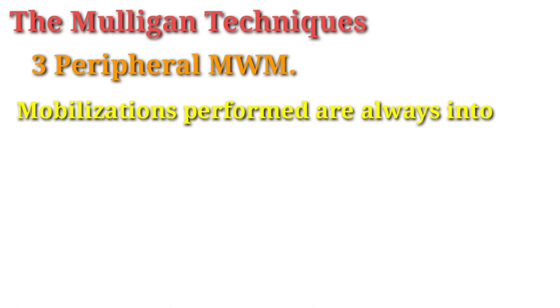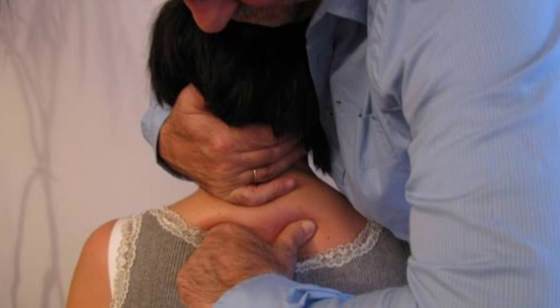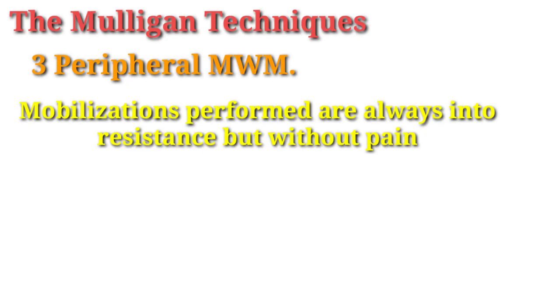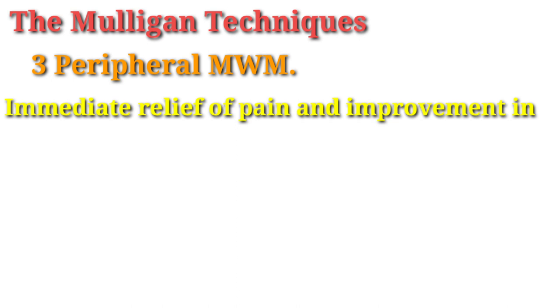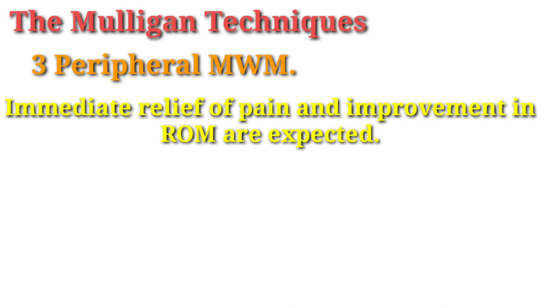This mobilization is performed against resistance but without pain. Mulligan says that the accessory glide and passive glide must be pain-free. If there is pain, it means the glide is not correct or the treatment plan has an issue, because in the Mulligan technique there is no pain. After applying the glides, immediate relief of pain and improvement in range of motion are expected. If there is no immediate relief or improvement, you re-assess the treatment plan and choose the correct glide until a good improvement or relief is achieved.